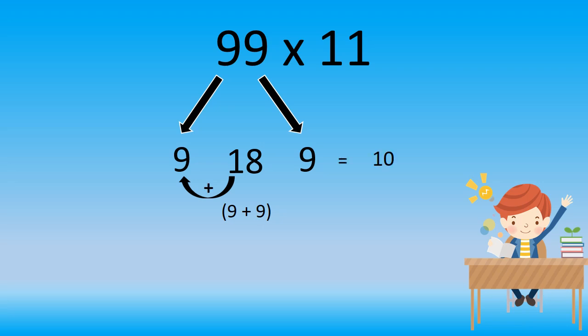And then write down the remaining numbers, that is 8 and 9. So the answer for 99 multiplied by 11 is equal to 1089.